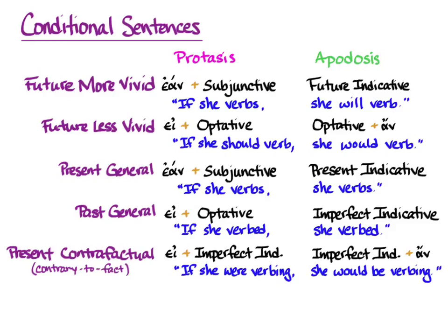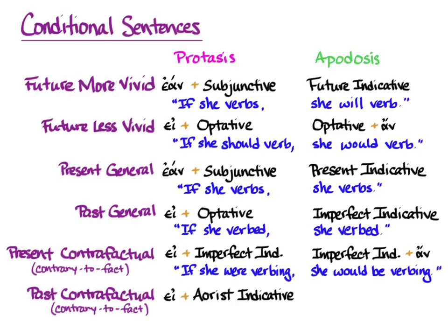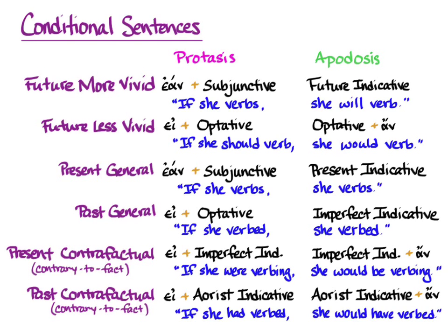Now the Past Contrafactual, or past contrary to fact. With this one, something wasn't true in the past, but we need to talk about what would have happened if it had been. The pattern is εἰ plus the aorist indicative, and the aorist indicative plus ἄν in the apodosis. The default translation is: 'if she had verbed, she would have verbed' — in other words, if she had verbed but she didn't, this would have happened but it didn't.